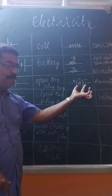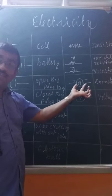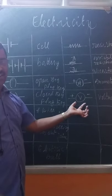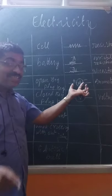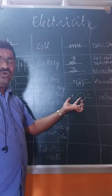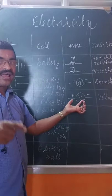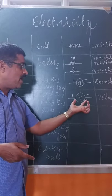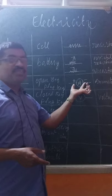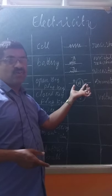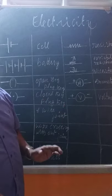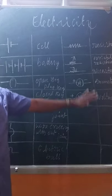This is an ammeter, used to measure current. This is a voltmeter, used to measure potential difference. The ammeter is always connected in series. The voltmeter is always connected in parallel. So: ammeter connected in series, voltmeter connected in parallel — these are the symbols.